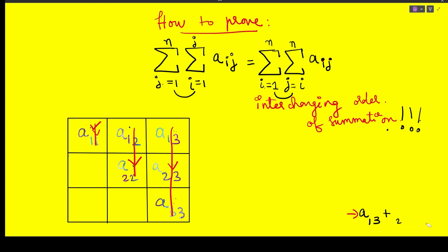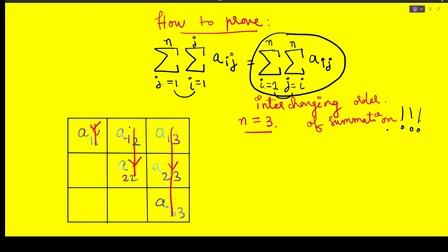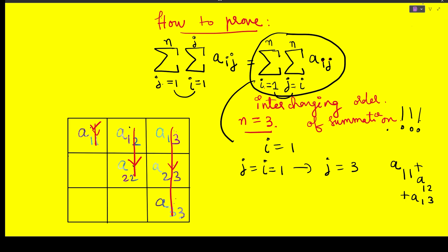Now let's look at the right-hand summation. I should mention that I'm fixing n = 3 here, and we'll generalize to any value of n afterward. For the right-hand case, fix i and start with i = 1. Vary j from i to n = 3. With i fixed at 1, the summation gives a₁₁ + a₁₂ + a₁₃.